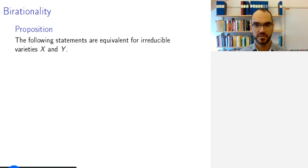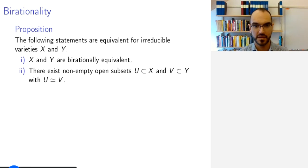There is an alternative way to phrase this property. Namely, the following statements are equivalent for irreducible varieties X and Y. First is X and Y are birationally equivalent, so there is a birational map between them. Second, there exist non-empty open subsets U in X and V in Y that are isomorphic.